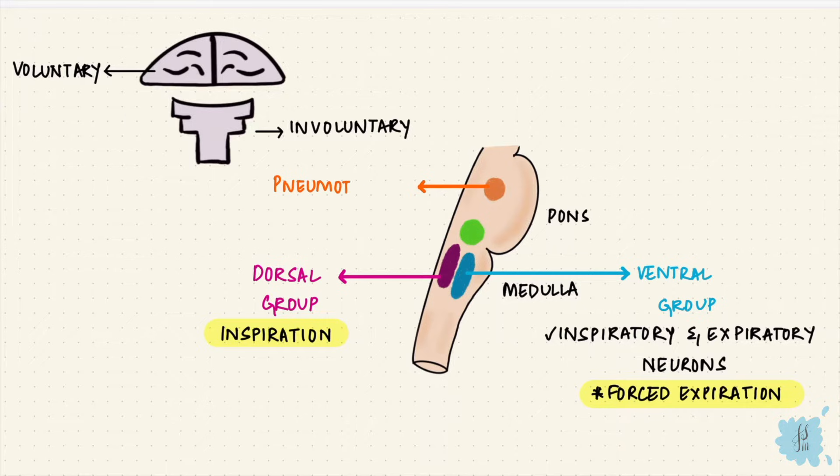The pons has a pneumotoxic and apneustic center. The apneustic center stimulates the inspiratory center, and the pneumotoxic center inhibits the apneustic center and switches off the center for inspiration. So it controls the rate and depth of breathing.